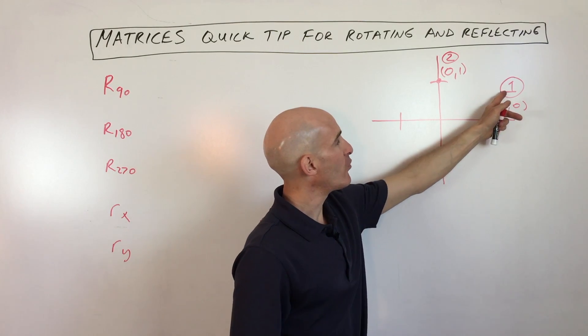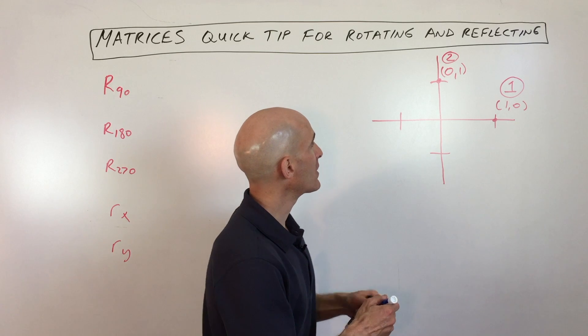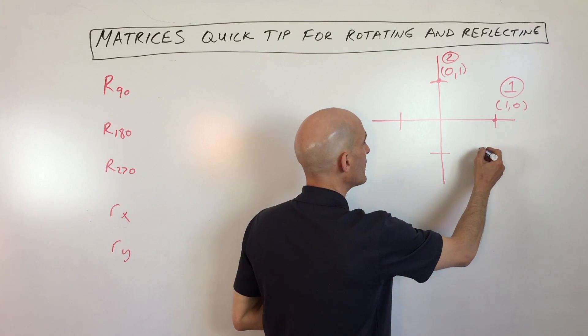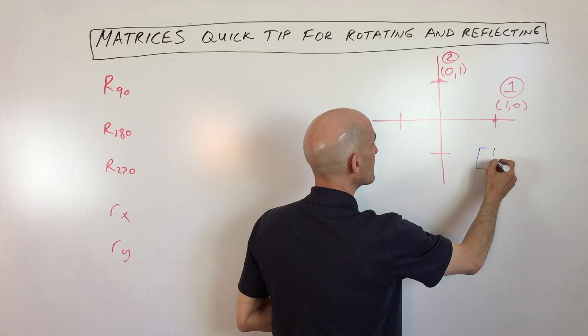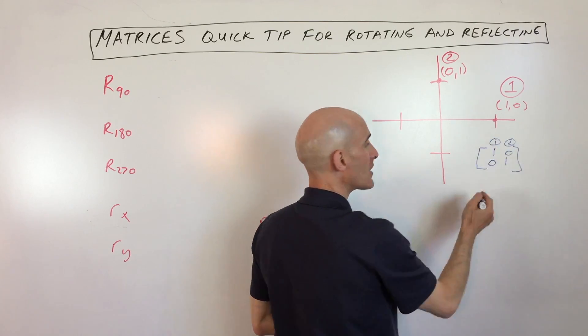What we're just taking a look at are these two points here, point number one and point number two. Point number one is 1, 0, and point number two is 0, 1. And if we make a matrix like this, 1, 0, 0, 1, this is point number one, and this is point number two.